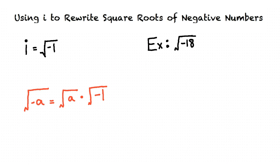Square root of negative 18. Rewrite this expression in terms of i. What do you think is the first step in writing this expression? Well, since there's a negative sign in the square root, we can rewrite this as the square root of 18 times the square root of negative 1.